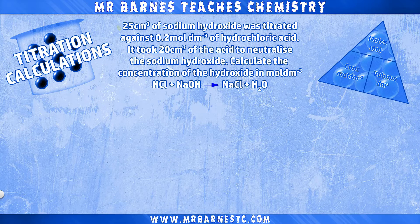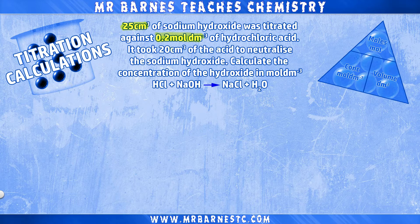If not, go to the video appearing in the top right and watch that first. So 25 centimetres cubed of sodium hydroxide was titrated against 0.2 moles per decimetre cubed of hydrochloric acid. It took 20 centimetres cubed of the acid to neutralise the sodium hydroxide. Calculate the concentration of the hydroxide in moles per decimetre cubed. They also give the balanced equation here, which they will always do for this type of question.